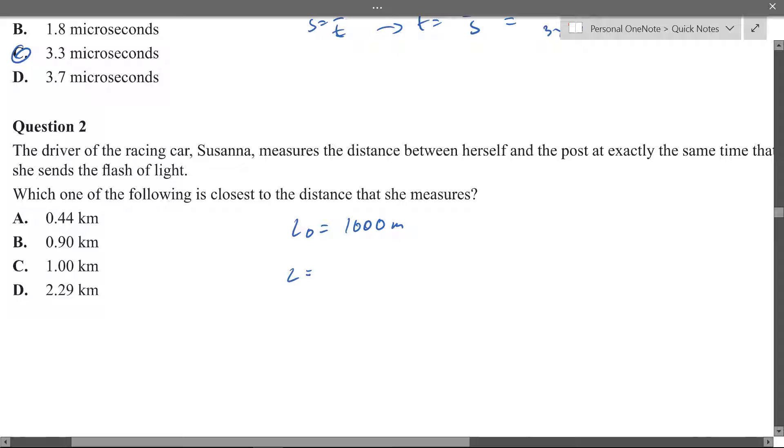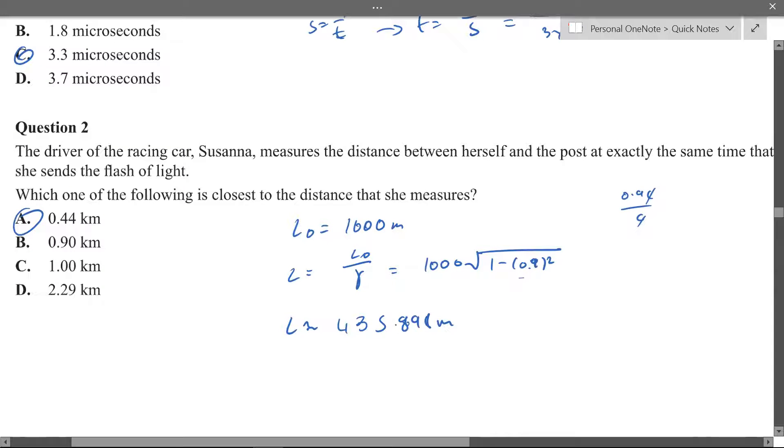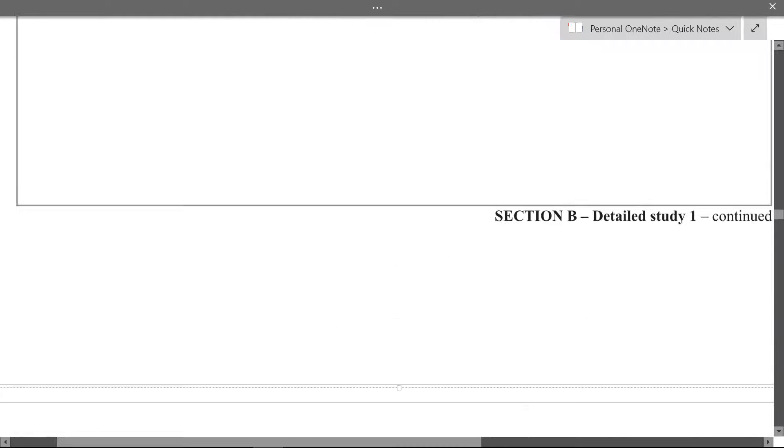So we know the formula for this is 1 minus 0.9 squared. 0.9 just because it's 0.9c so if we divide that by c, c's will cancel so it's just that. You put that into your calculator you get 435.898 metres but yeah it's just, okay question 3.